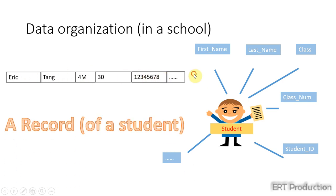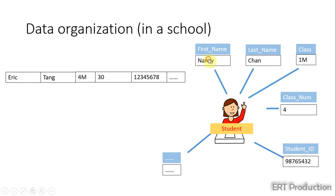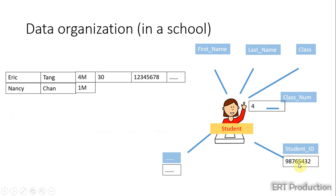Here is another student. We will arrange her data into another row. And the order of the properties are the same.